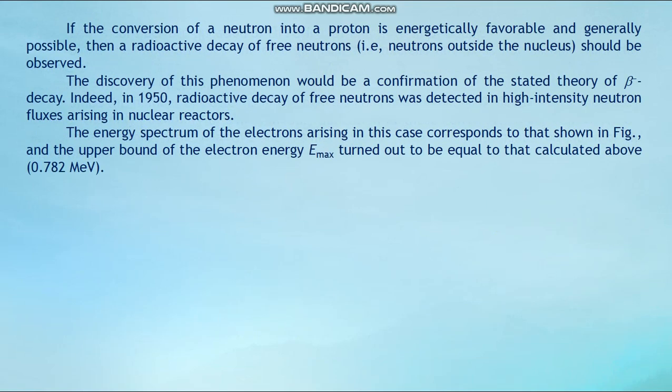If the conversion of a neutron into a proton is energetically favorable, then radioactive decay of free neutrons (i.e., neutrons outside the nucleus) should be observable, and its discovery would confirm the theory of beta minus decay. Indeed, in 1950, radioactive decay of free neutrons was detected in high-intensity neutron fluxes from nuclear reactors. The energy spectrum of the electrons in this case matched that expected, with the upper bound E_max equal to the calculated energy of 0.782 MeV.